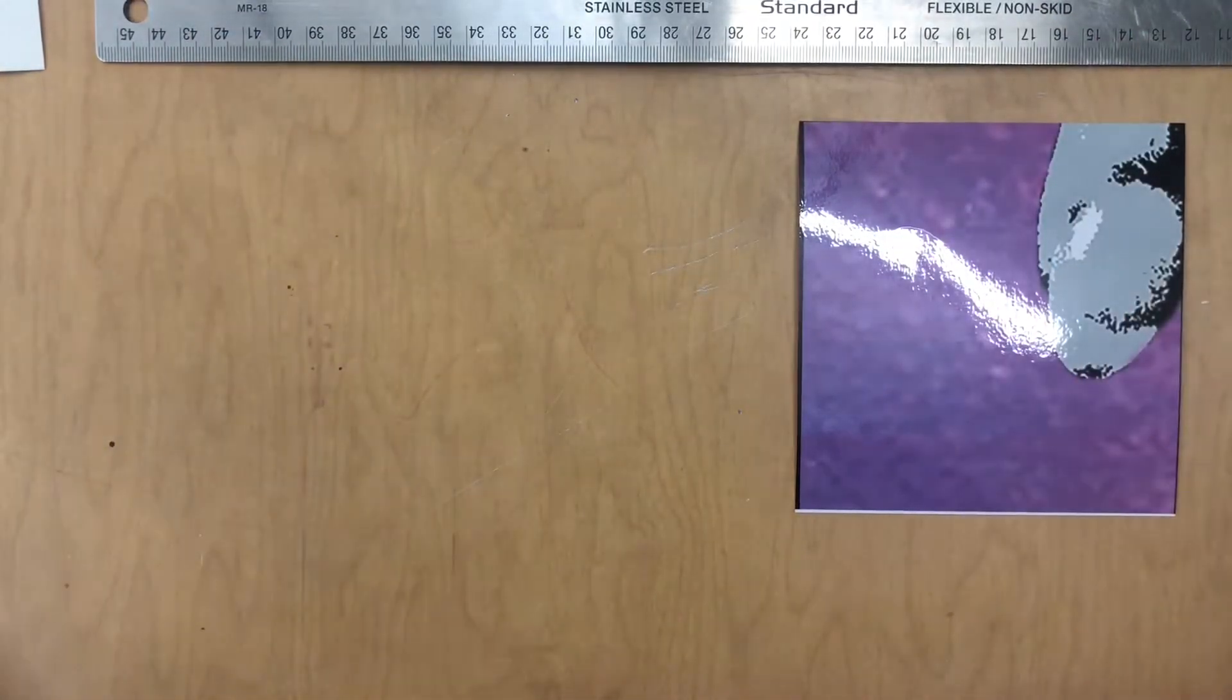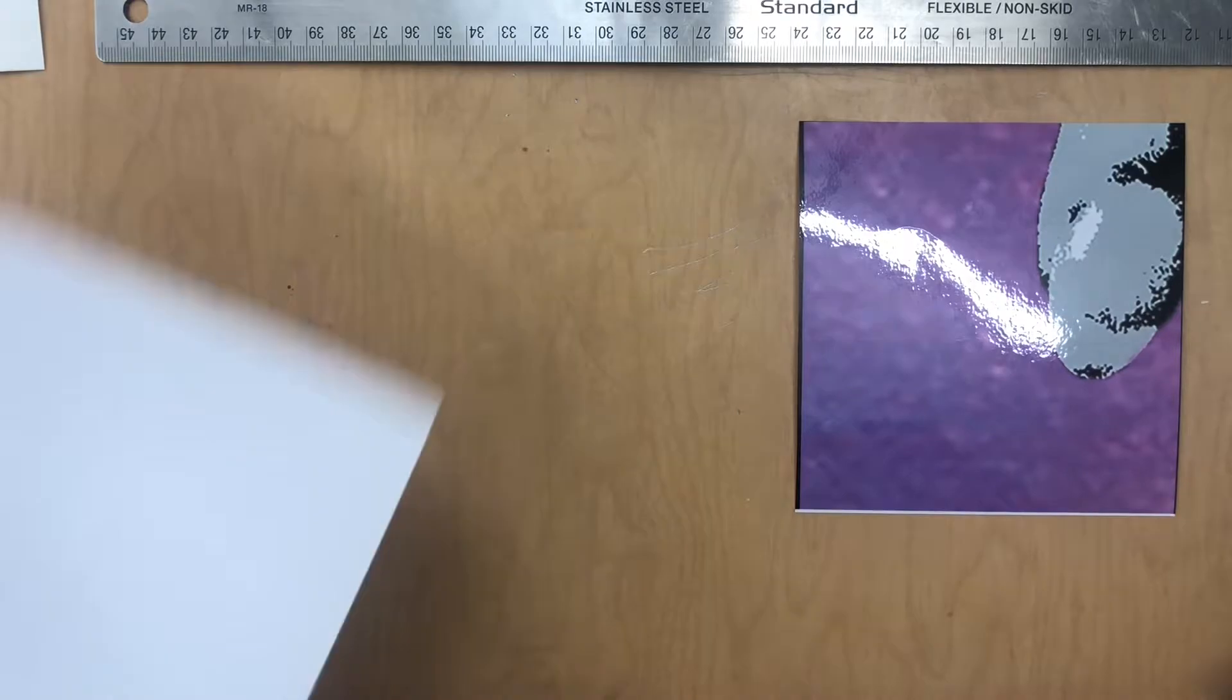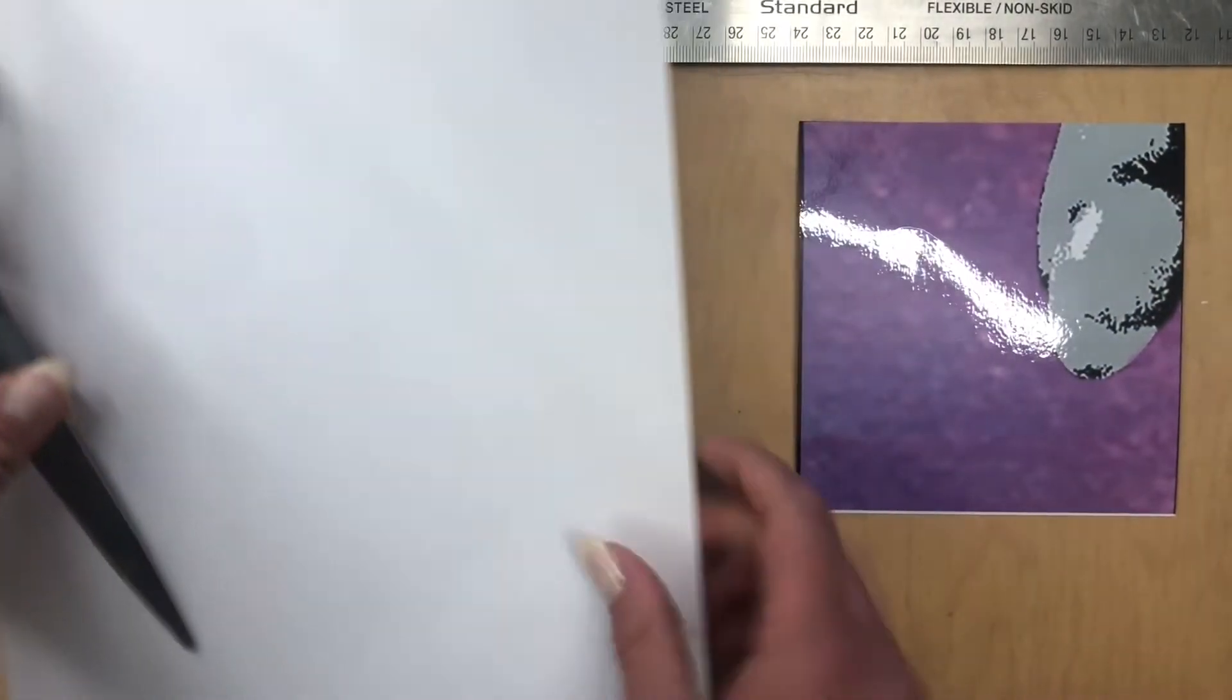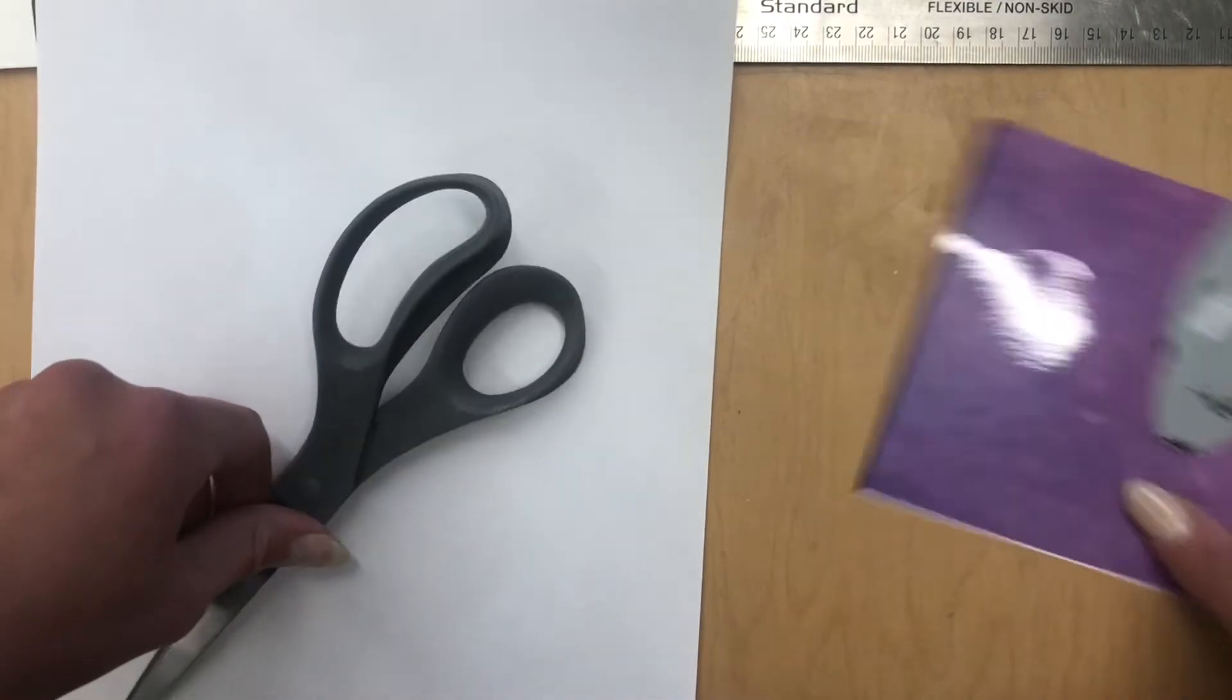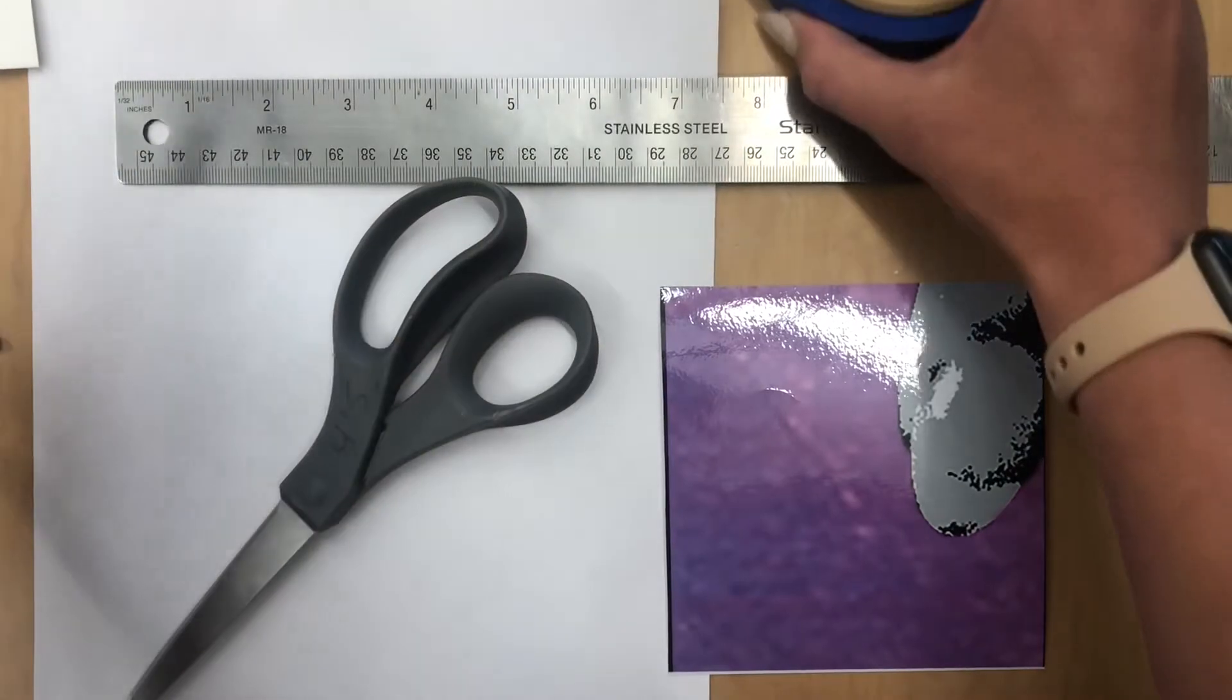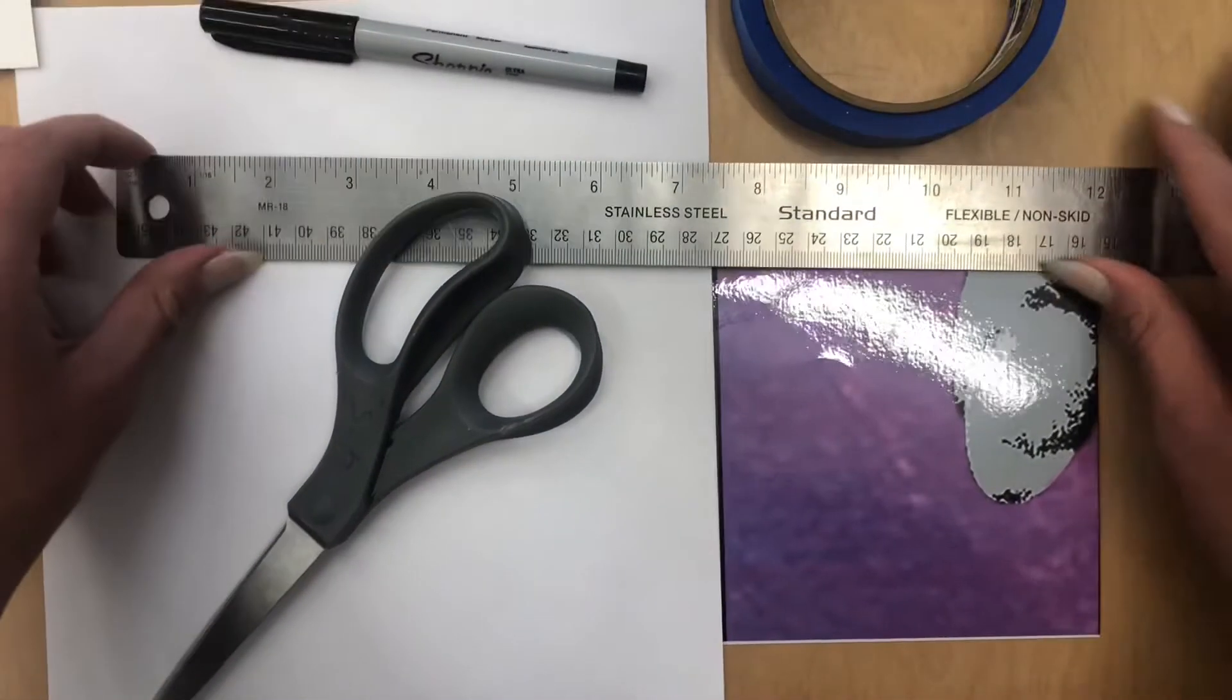And the last thing you're going to need is just a sheet of white paper. Oh, and also a pair of scissors. So paper, scissors, your mural block, a ruler, tape, and a marker or a pen.